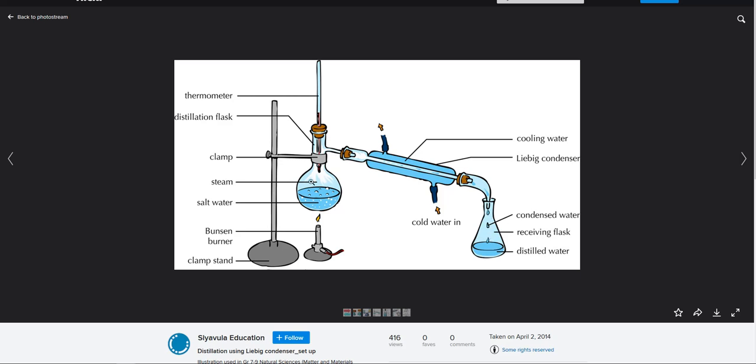When you're done, your salt will all be in this container, and your water will all be in this container. So if you wanted to separate a homogeneous mixture, you might use distillation, versus if you have a heterogeneous mixture, you might use filtration.